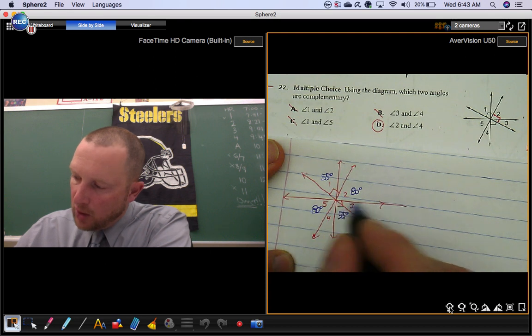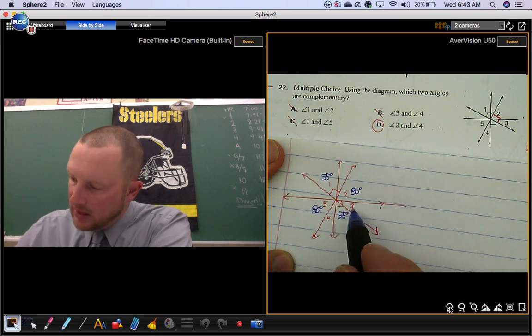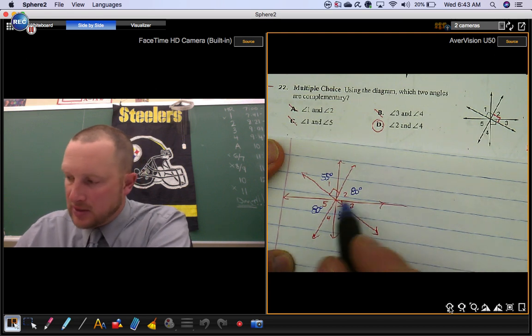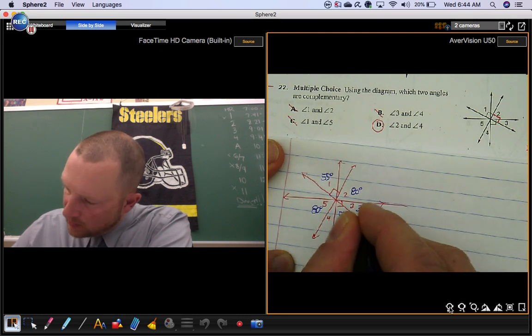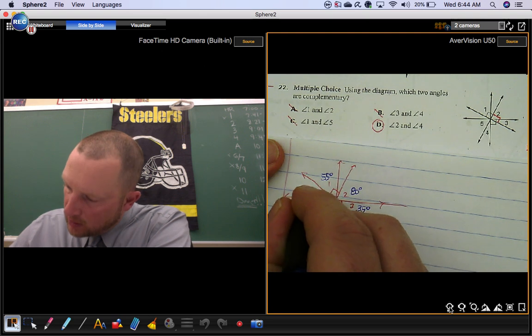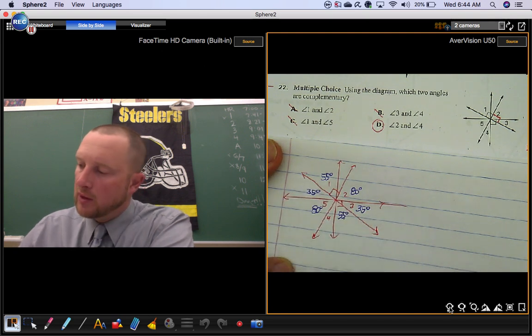Angle three. We can already calculate its measure because angle three and the angle that's next to it make 90 degrees. So this would be 35 degrees. And then its vertical angle would be 35.